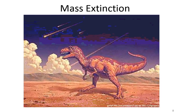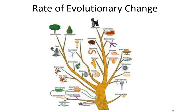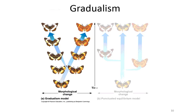Mass extinction is different — it's when some sort of event causes the worldwide extinction of many species. The dinosaurs are thought to have gone extinct from a meteor that struck the earth. We're currently living in a mass extinction period where humans are the cause. This leads us to look at the rate of evolutionary change, because there are two primary ideas as to how evolution occurs.